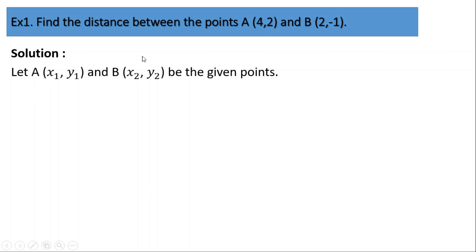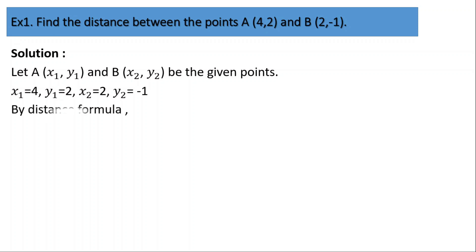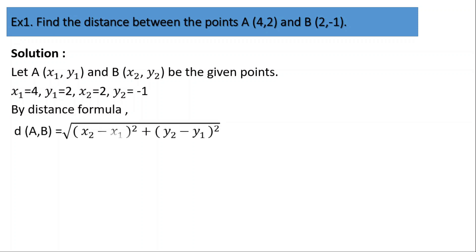Now we are going to apply the distance formula. The values are: x1 = 4, y1 = 2, x2 = 2, and y2 = -1. The distance formula is the square root of (x2 minus x1) squared plus (y2 minus y1) squared.